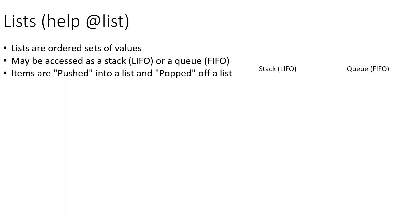The second data structure is lists. Lists are ordered sets of values, and since they are ordered we can access a list as either a stack or a queue. Stacks are last-in first-out, and queues are first-in first-out. We don't have to define which we want ahead of time — it depends on which side we push and pop items from.